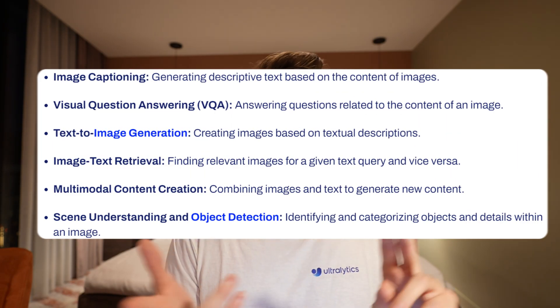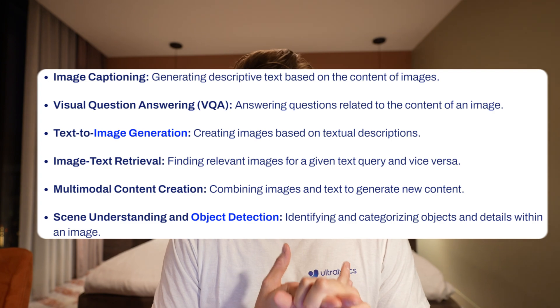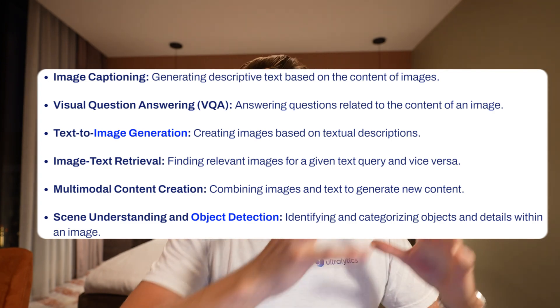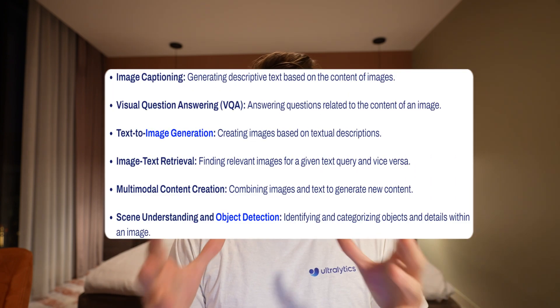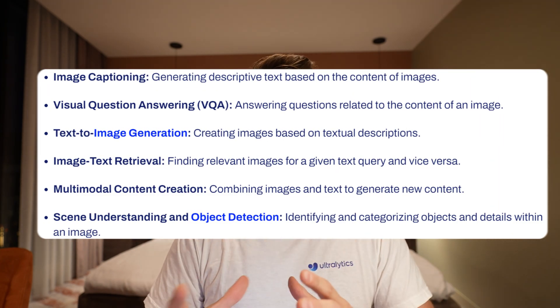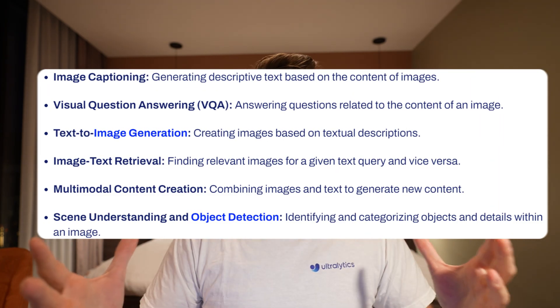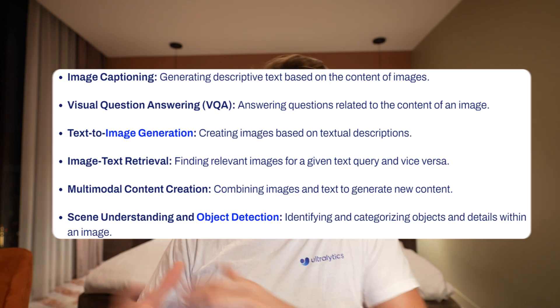Vision language models can be used for both image captioning and visual question answering. Image captioning is where we take an image, put it into the model, and get a description — either short or very detailed. Visual question answering lets us ask questions about what's in the image, like what type of car it is, what color it is, or how many people are in the image.